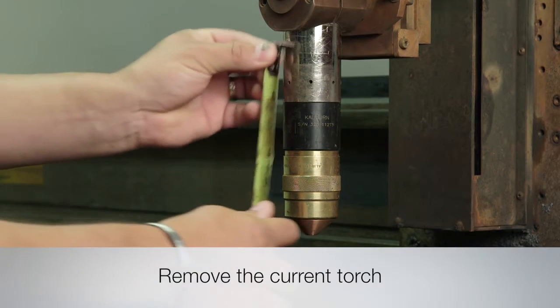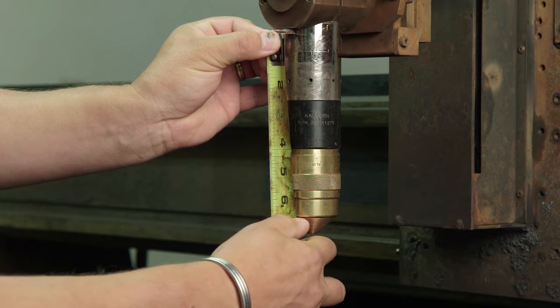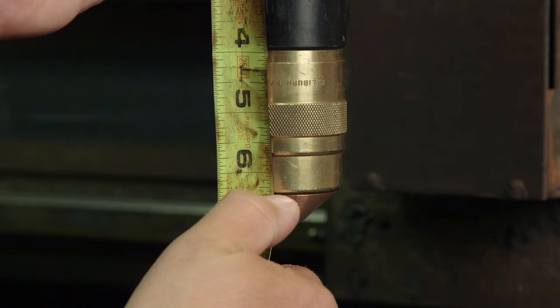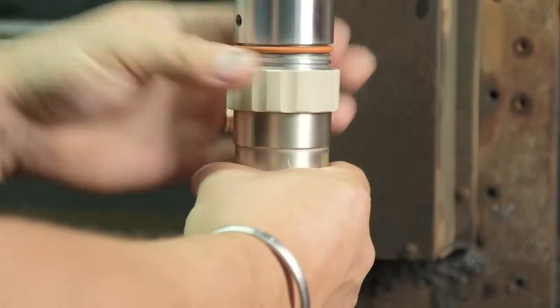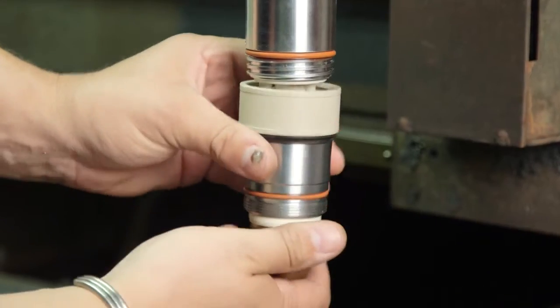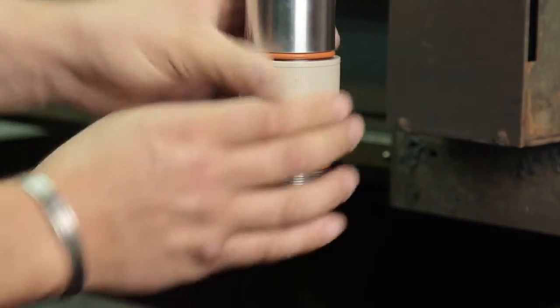The first step is to remove the current torch. Measure the distance from the bottom of the torch clamp to the tip of the assembled torch. The distance should be the same after installing the new torch. If you are replacing a Caliburn quick disconnect torch, remove the lower torch body from the torch base, as you will be replacing only the Caliburn torch head with the CenterCut torch head.